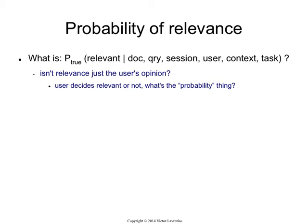But first, before we talk about that, what is this probability of relevance thing, anyway? Relevance is — you've got a user, he put in a query, he's either going to like the document or not like the document. It seems like relevance is really a binary decision. It should be 0 or 1 — what's the probability?